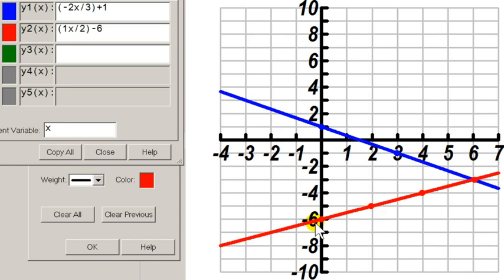Line one is here. Line two is here. The point of intersection appears to be six, comma, negative three.